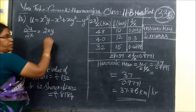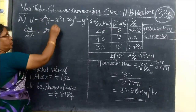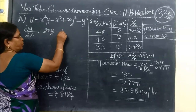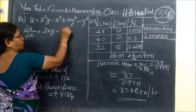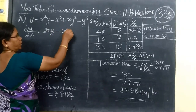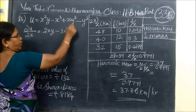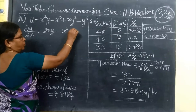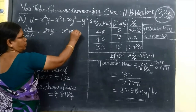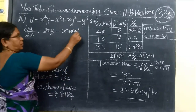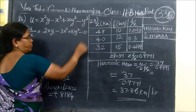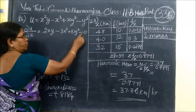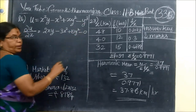When differentiating with respect to x, x terms are differentiated. So we get 3x squared. Then y squared is appearing — x is appearing, so y squared you write as it is. The constant term with respect to x will be 0. Don't think that it is 3y squared.